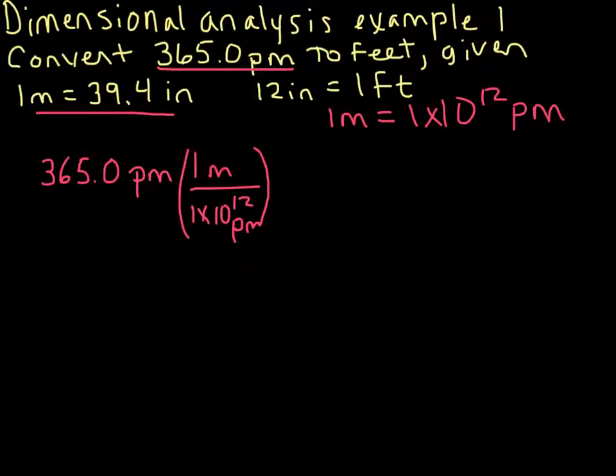Now why do I put the picometers on the bottom? Well, I need these guys to cancel out. I'm using a conversion factor where the number of picometers here, 1 times 10 to the 12th, is equal to 1 meter. So that's the same quantity, but in different units. All right, so now all of our picometers are canceled out, and we are now in meters. If I were to put this into the calculator, I'd find out that it's 3.65 times 10 to the negative 10 meters.